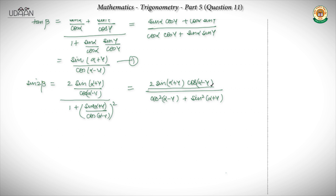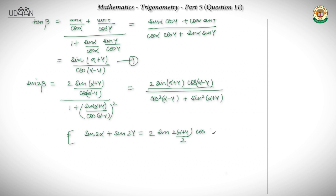Now I need to convert this. I can see that the numerator 2 sin(α+γ) cos(α-γ) relates to sin 2α plus sin 2γ. If I apply the formula sin C plus sin D — expanding sin 2α plus sin 2γ — I get 2 sin((2α+2γ)/2) cos((2α-2γ)/2), which simplifies to 2 sin(α+γ) cos(α-γ). So the numerator equals sin 2α plus sin 2γ.